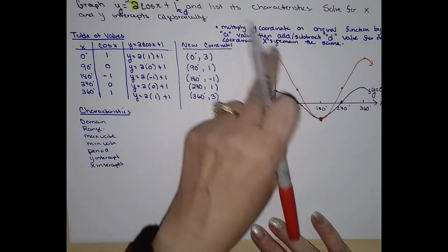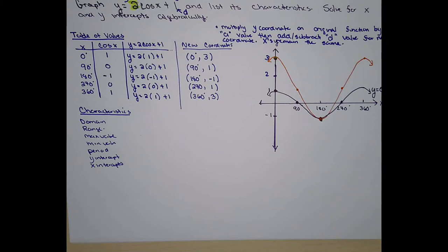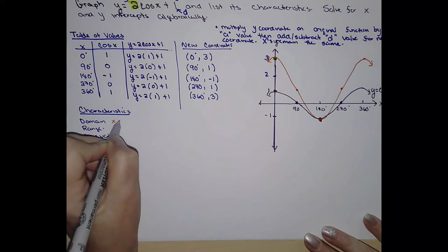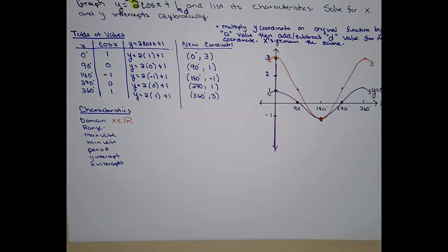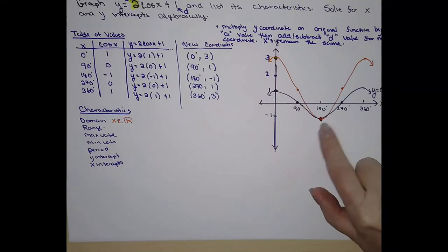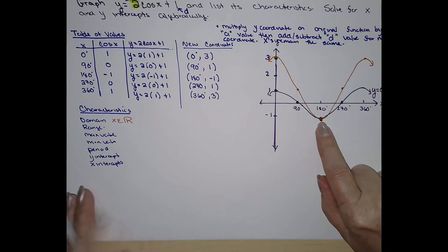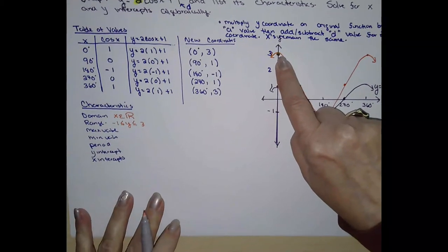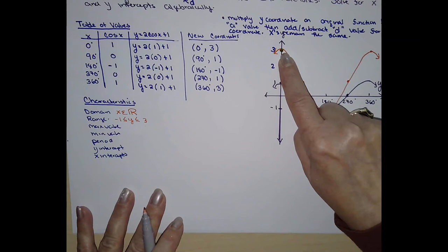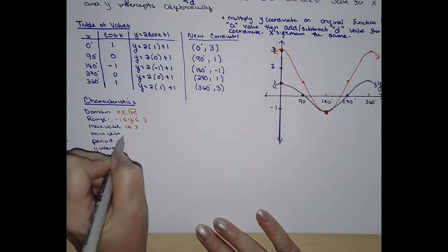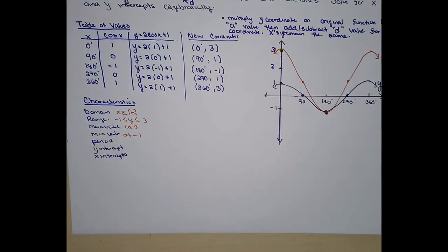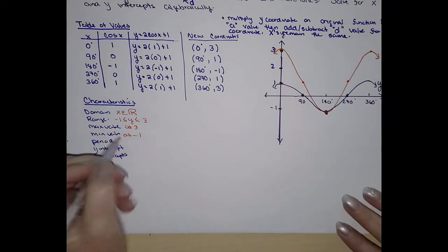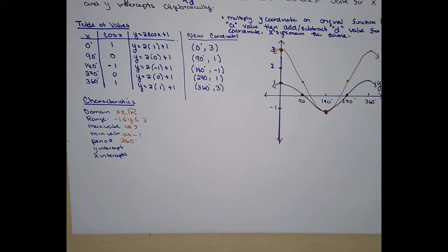The domain never changes — that's what the arrows represent at the end. The domain of any sine or cosine function goes on forever. The range is your y-coordinates. My smallest y-coordinate is negative 1, but now it goes up to 3 because of the stretch and the shift. The maximum value is at 3, the minimum value is at negative 1. The period never changes either — the graph repeats every 360 degrees.